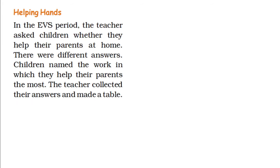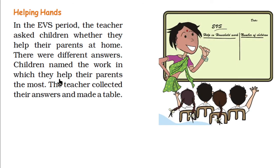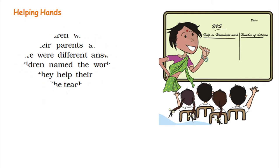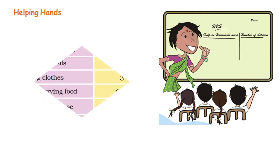In the EVS class period, the teacher asked children whether they helped their parents at home. There were different answers. Children named the work in which they helped their parents the most. The teacher collected their answers and made a table. So the teacher asked the children who is helping their parents and made a list. How did the list look like? The list looked like this.